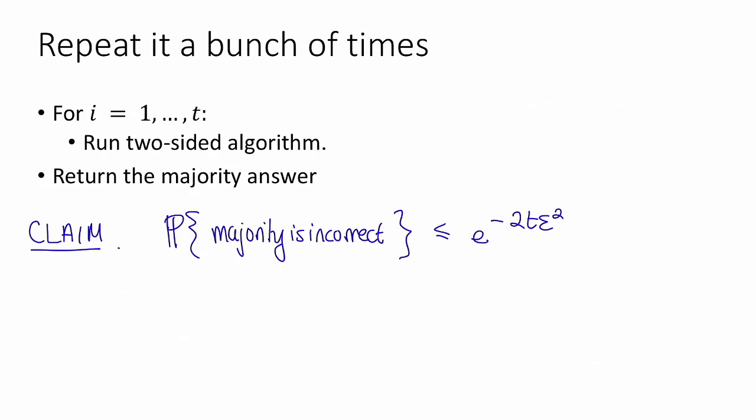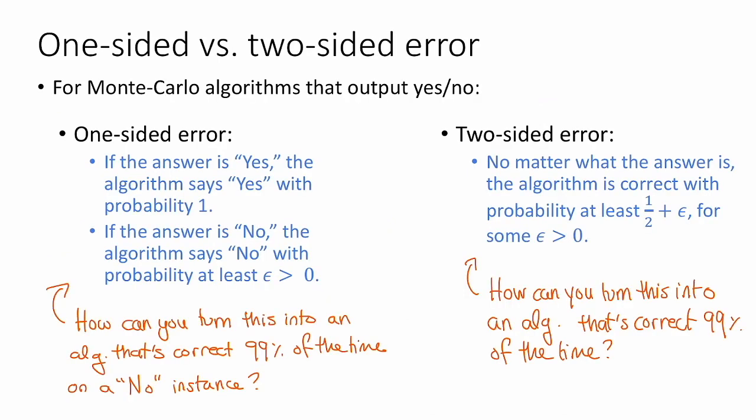However, given the claim, notice that if t is sufficiently large to the tune of, say, 20 over epsilon squared, then again, the probability that this algorithm, this sort of repeated algorithm fails, is very small, less than or equal to e to the minus 10, also known as tiny. Okay, so hopefully that explains why these guarantees, one-sided error and two-sided error, are reasonable guarantees to have, even though at first sight they might seem a little bit weak.